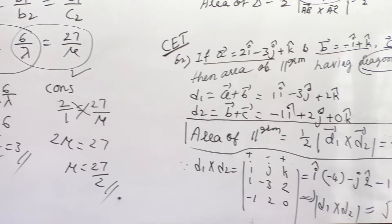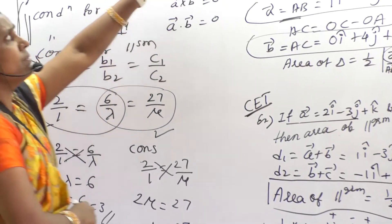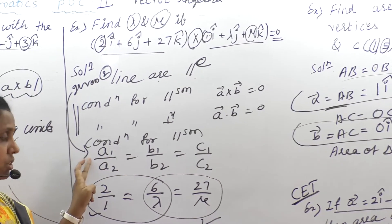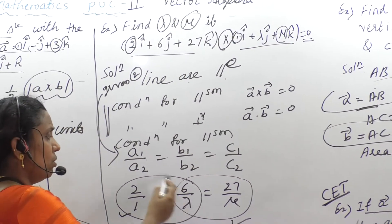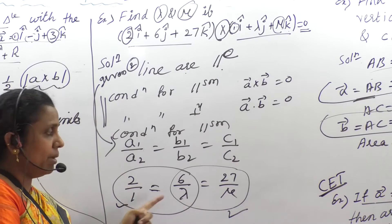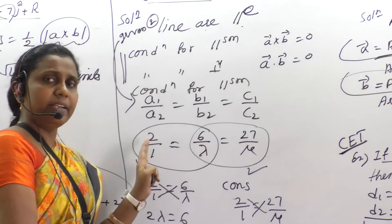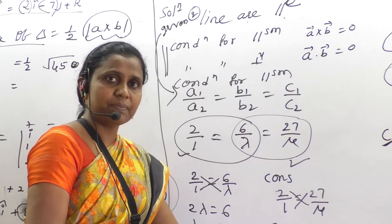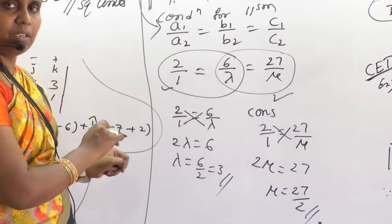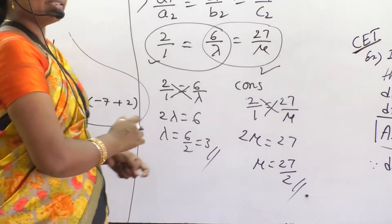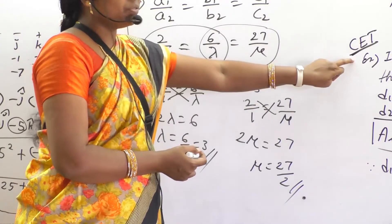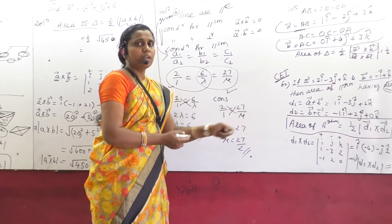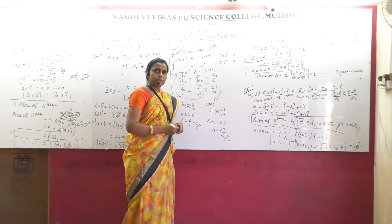Next is to find lambda and mu if the cross product is given equal to zero — then the parallelism condition you have to apply. With the known values, you solve for the unknowns lambda and mu. I hope this is very useful. These are very important examples collected from CET — you can go through such types of questions in your CET reference book.